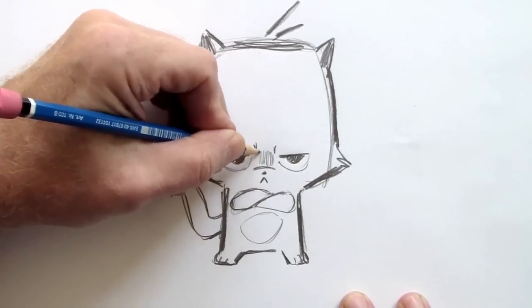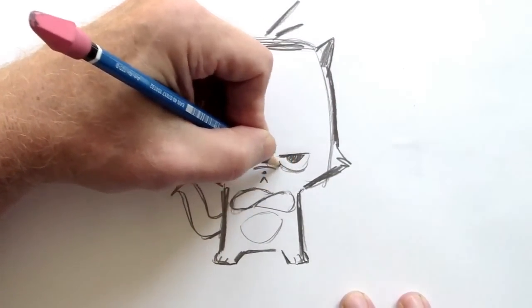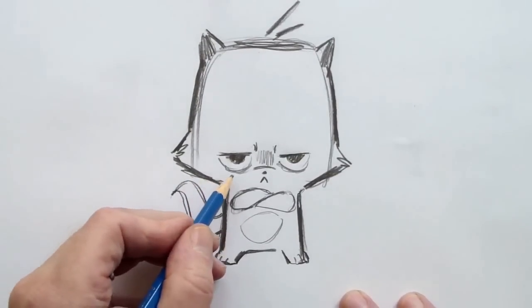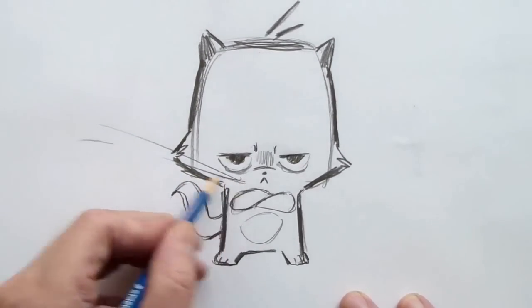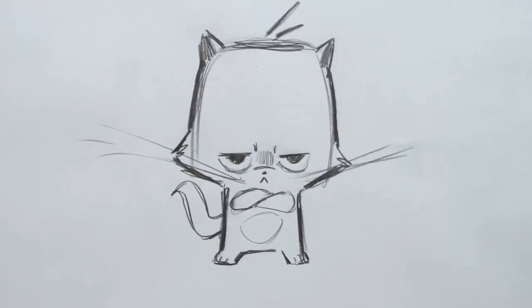Now we're going to add a little shading here and a little shading under the eyes to make him look kind of grave. Big whiskers, which is funny because he's such a little guy.